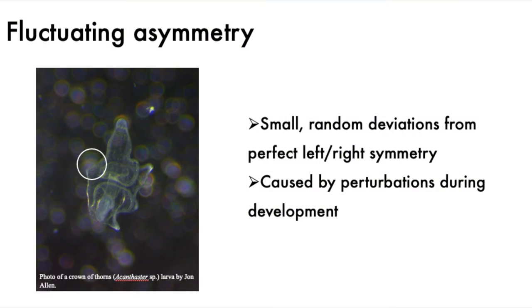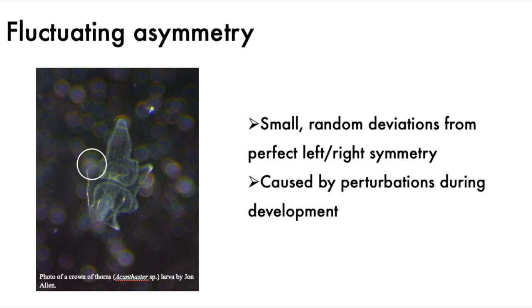Bilaterally symmetrical organisms — those that have one axis of symmetry and left and right hand sides that are mirror images of one another — sometimes exhibit what's called fluctuating asymmetry: small random deviations from perfect left-right symmetry. Often these little differences are due to random disturbances experienced by an organism during its development, maybe a different temperature experienced on one side but not the other, or not enough food for the organism to grow normally.